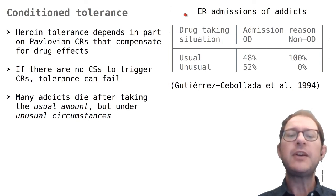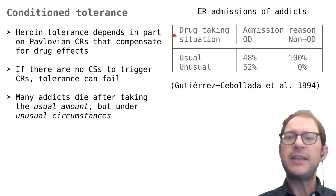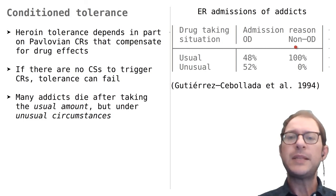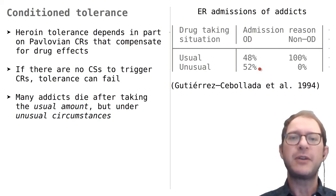This table shows data about ER admissions of heroin addicts in Spain. The reason for admission could be either a drug overdose or something else. The situation in which the person had taken the drug was classified as usual or unusual for that person. All patients admitted for non-overdose-related reasons had been taking the drug under their usual circumstances. On the other hand, about half of the people admitted with an overdose had been taking the drug under unusual circumstances. This is what we expect from the conditioned tolerance theory of overdose, where failure of the brain to recognize the usual cues leads to decreased tolerance.